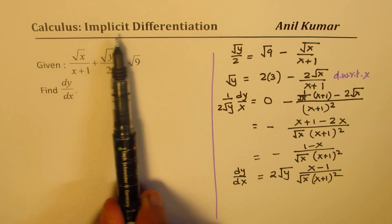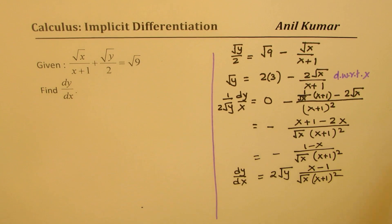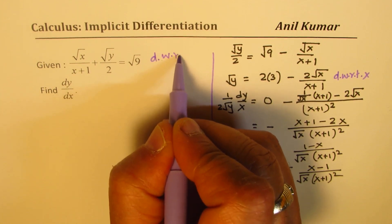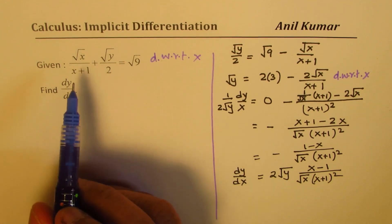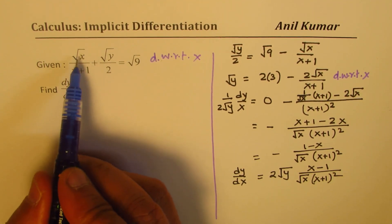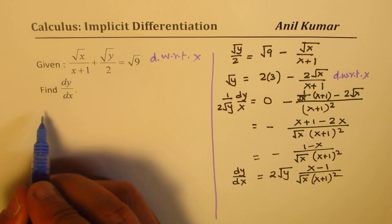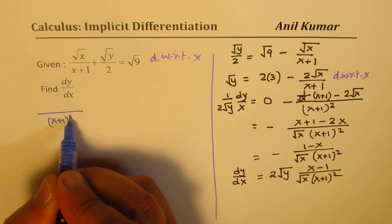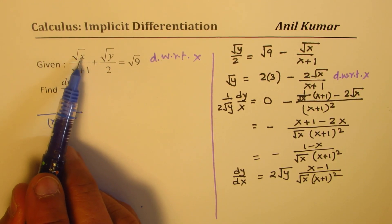So we adopt implicit differentiation. Let us see how to solve this question using implicit differentiation. We'll take the derivative with respect to x on both sides for the given function. For the first part, we apply the quotient rule just as we did here: we get (x plus 1) squared times the derivative of square root of x.